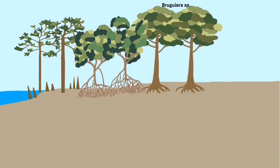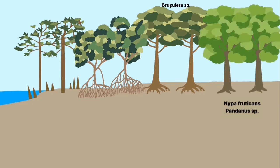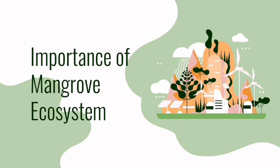In the inland zone, the soil becomes higher, harder, and only flows with seawater during high tides. The sedimentation process forms a new swamp that projects out towards the sea. The one-time shore gets further away from the sea, and the ground changes into land suitable for land trees such as Nipa fruticans and Pandanus species. The land trees then succeed and replace Bruguiera species.